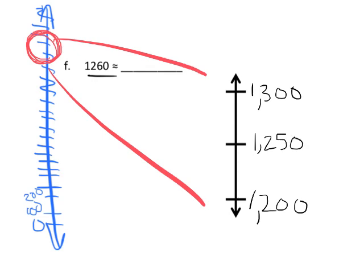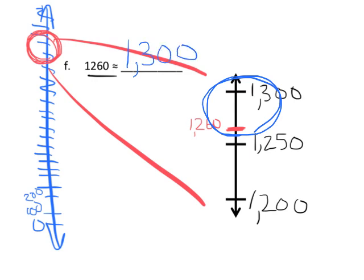We know that smack dab in the middle is 1250, and so using a little bit of estimation, we could say good enough right there. There's 1260. We don't have to graph it perfectly on the number line. We just have to know that it's somewhere in the top half rather than in the bottom half of the number line. And once we know that, we know that it rounds up to 1300, or thirteen hundred.